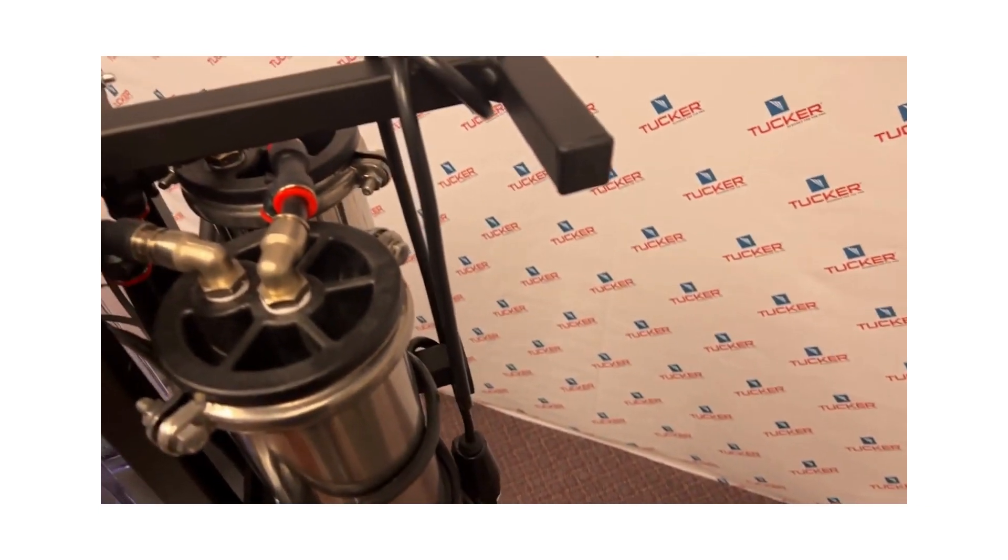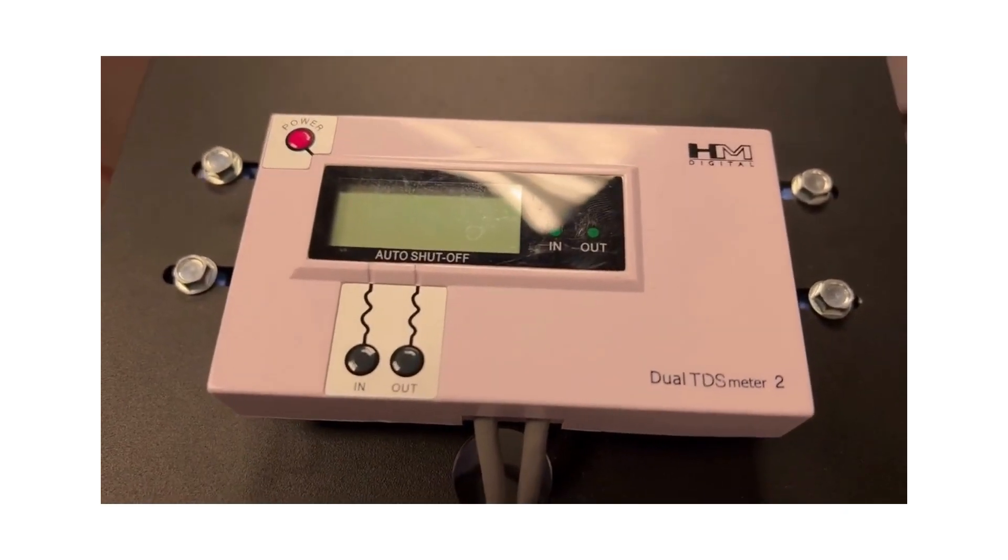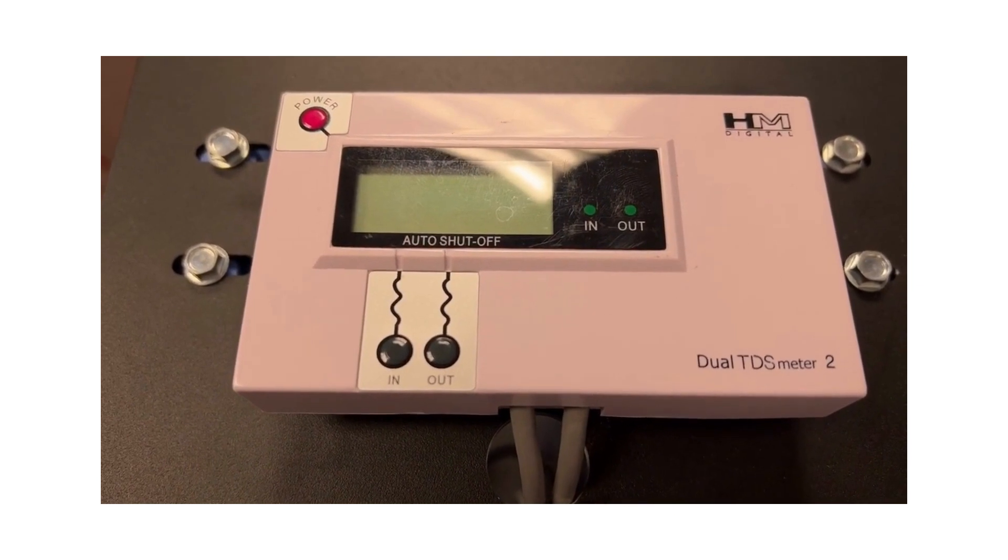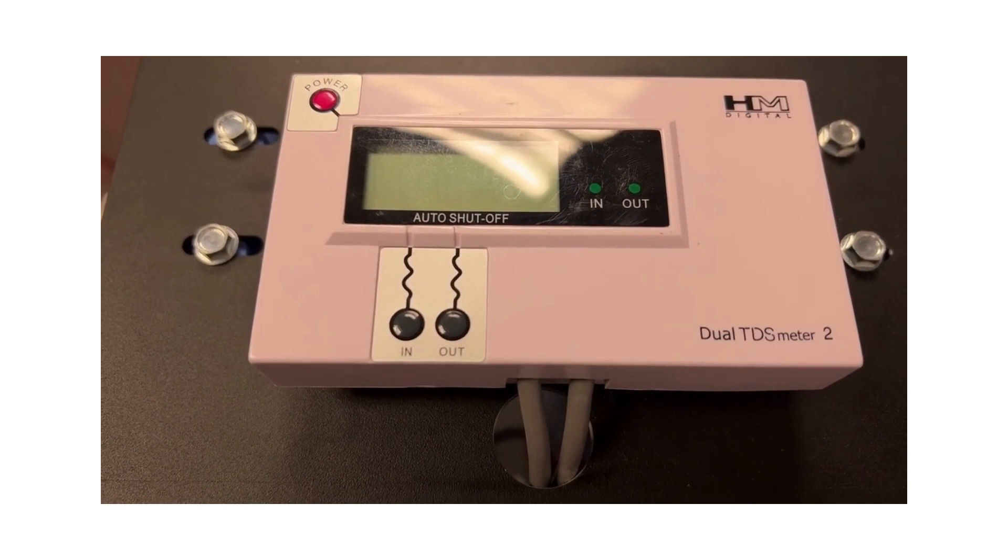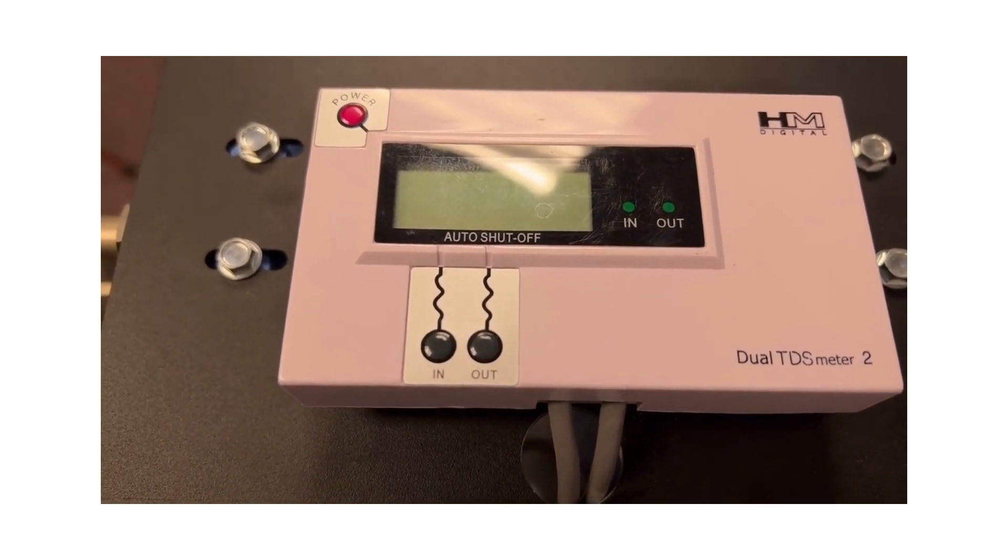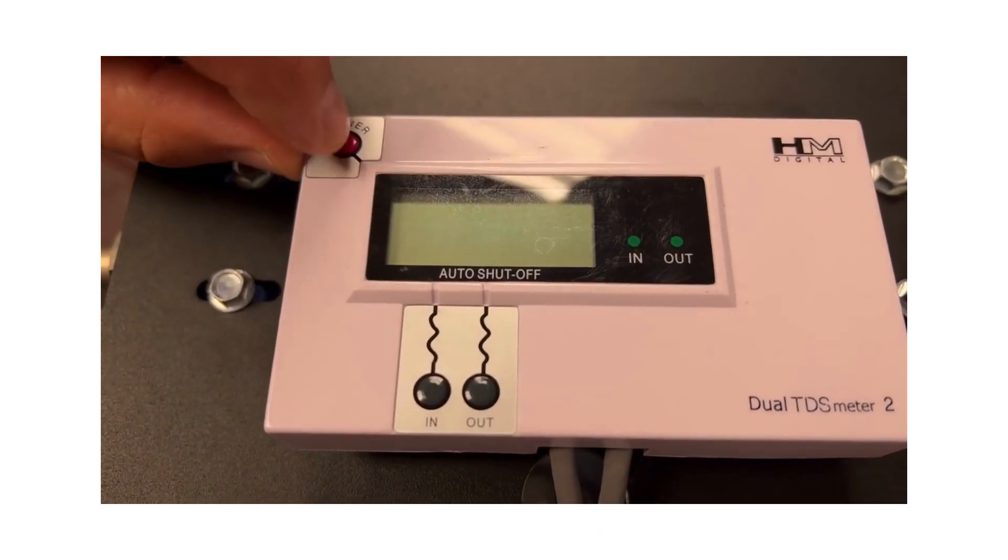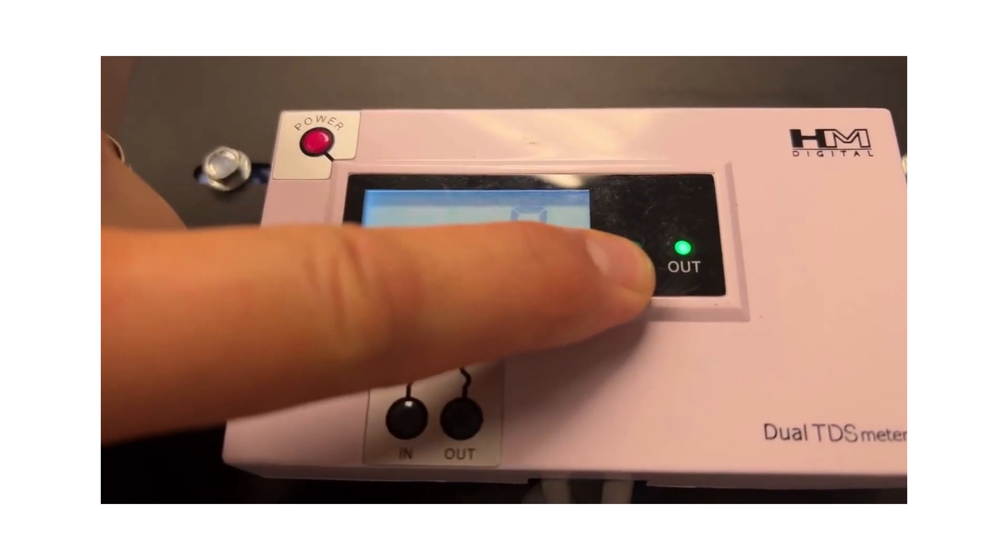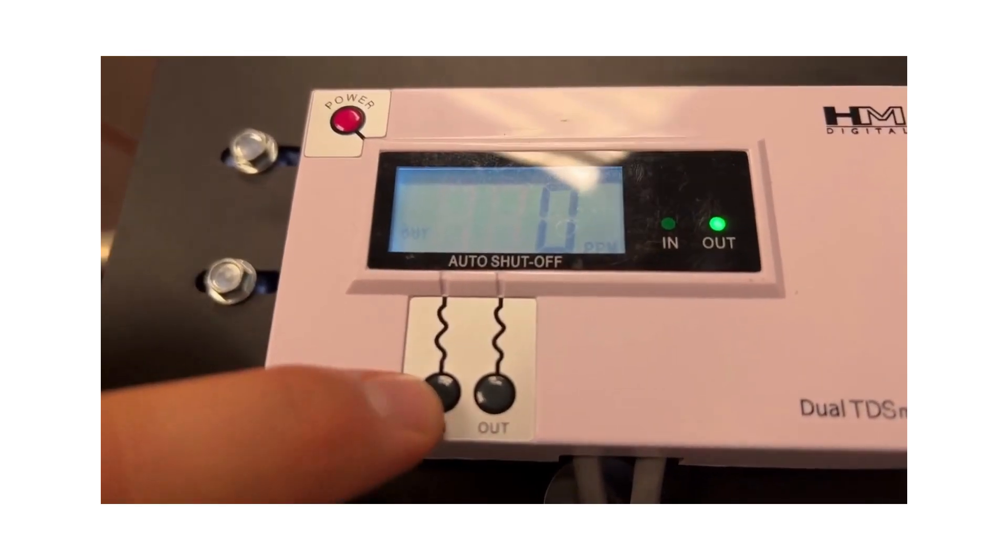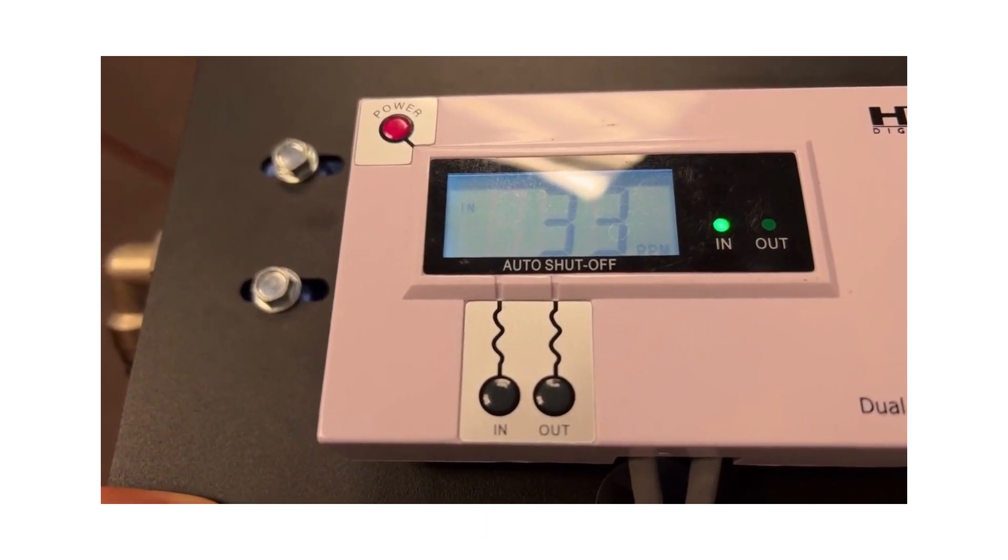Before going on to filtration, we want to quickly point out our onboard TDS meter. It sits here on top of our pre-filters. As you recall before, I had mentioned that you have the option on the Max Output to go between RO DI and RO only. And if you want to check out the quality of your RO water, this is how you can do it. Turn your power on. As you can see, it's currently on the out, out reads DI. So if you click on the in, this will give you a reading out of your ROs by themselves.